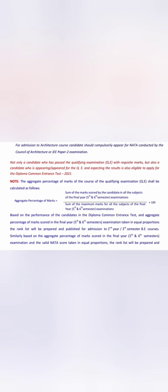The qualifying criteria — 45 percent for BE or 50 percent for B.Arch — will be calculated based on this formula: the sum of marks scored by the candidate in the final year (fifth and sixth semester) of diploma divided by the sum of maximum marks in those semesters. So the percentage is calculated only on the fifth and sixth semesters for DCET qualifying criteria.